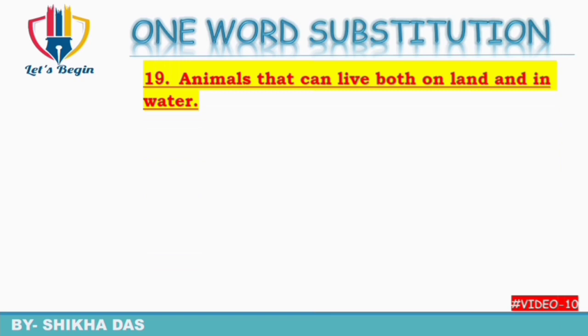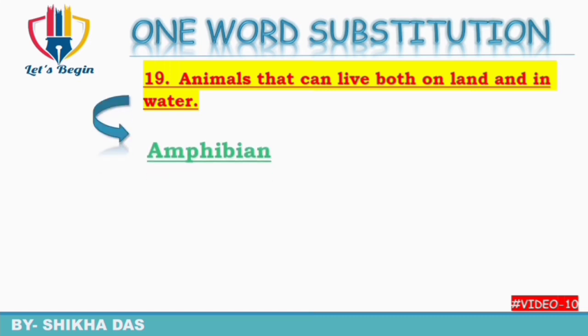Question number 19: animals that can live both on land and in water — land aur water dono jagah survive karne wale. Isko kaha jata hai 'amphibian'. Amphi means 'both' aur bian means 'life'. So amphibian — dono jagah jeene wala jaanvar.